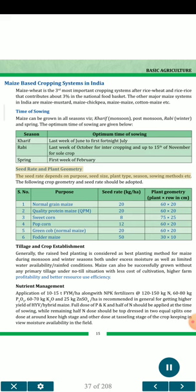The following crop geometry and seed rate should be adopted: Normal grain maize — 20 kg/ha, spacing 60 × 22 cm; Quality protein maize (QPM) — 20 kg/ha, spacing 60 × 23 cm; Sweet corn — 8 kg/ha, spacing 75 × 25 cm; Popcorn — 12 kg/ha, spacing 60 × 25 cm; Green cob normal maize — 20 kg/ha, spacing 60 × 26 cm; Fodder maize — 50 kg/ha, spacing 30 × 10 cm.